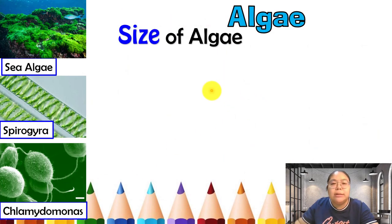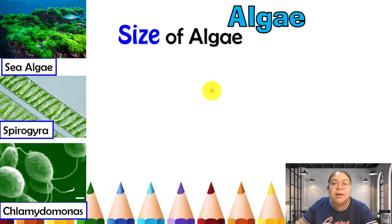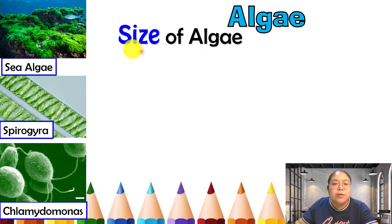The five characteristics for fungi are now complete: size, shape, nutrients, habitat, and method of reproduction. Now we move on to another microorganism — algae. Let's go through the size of algae.